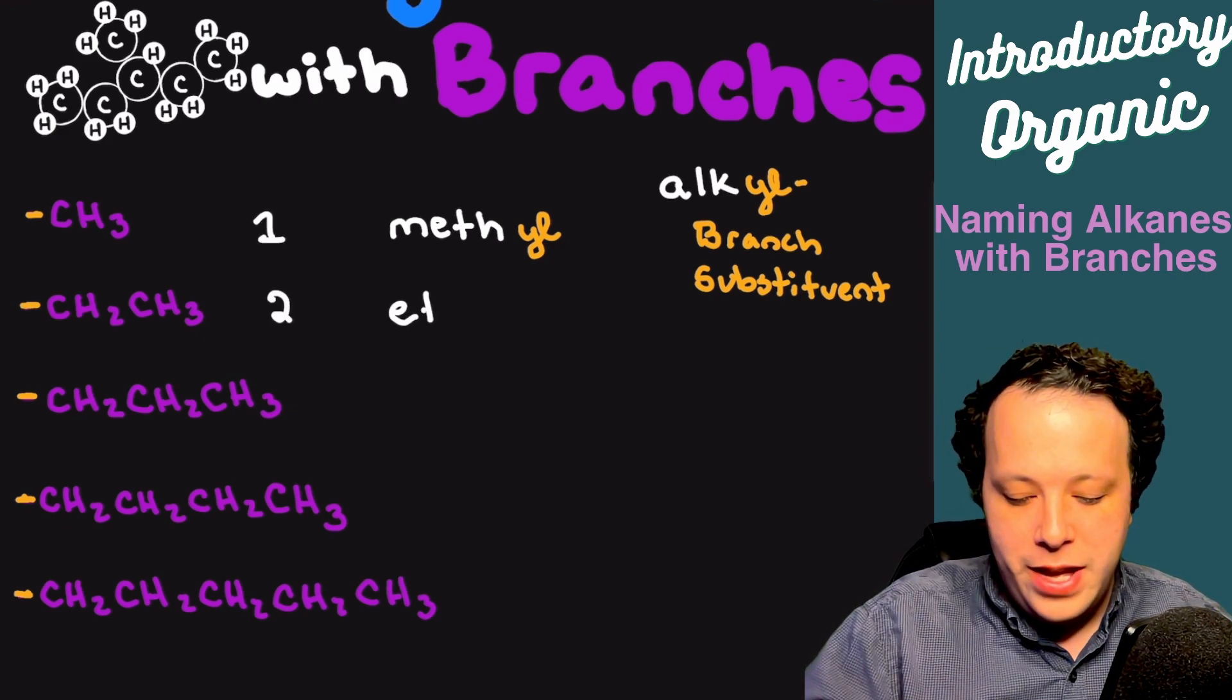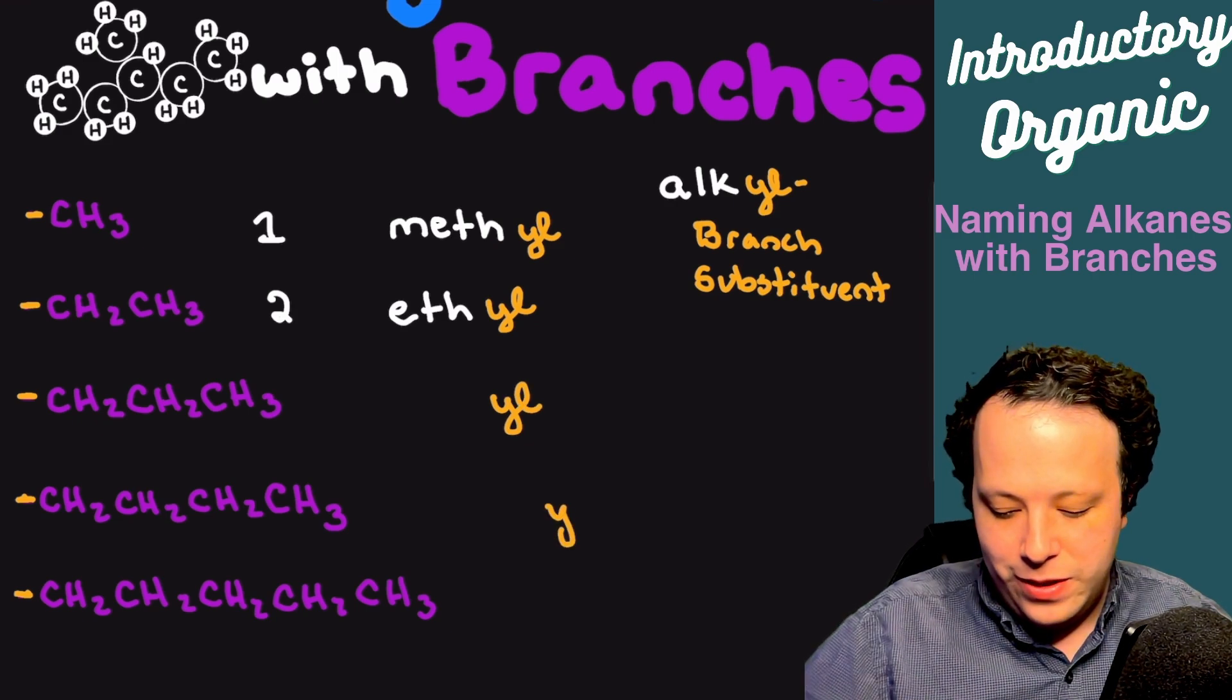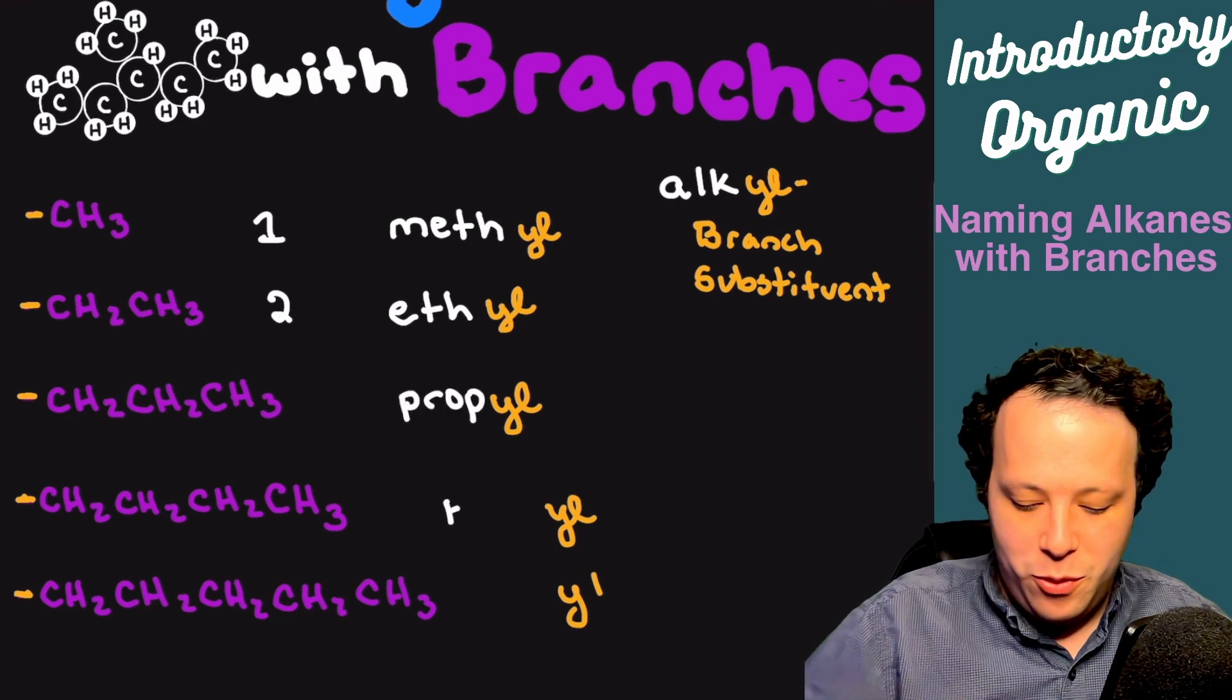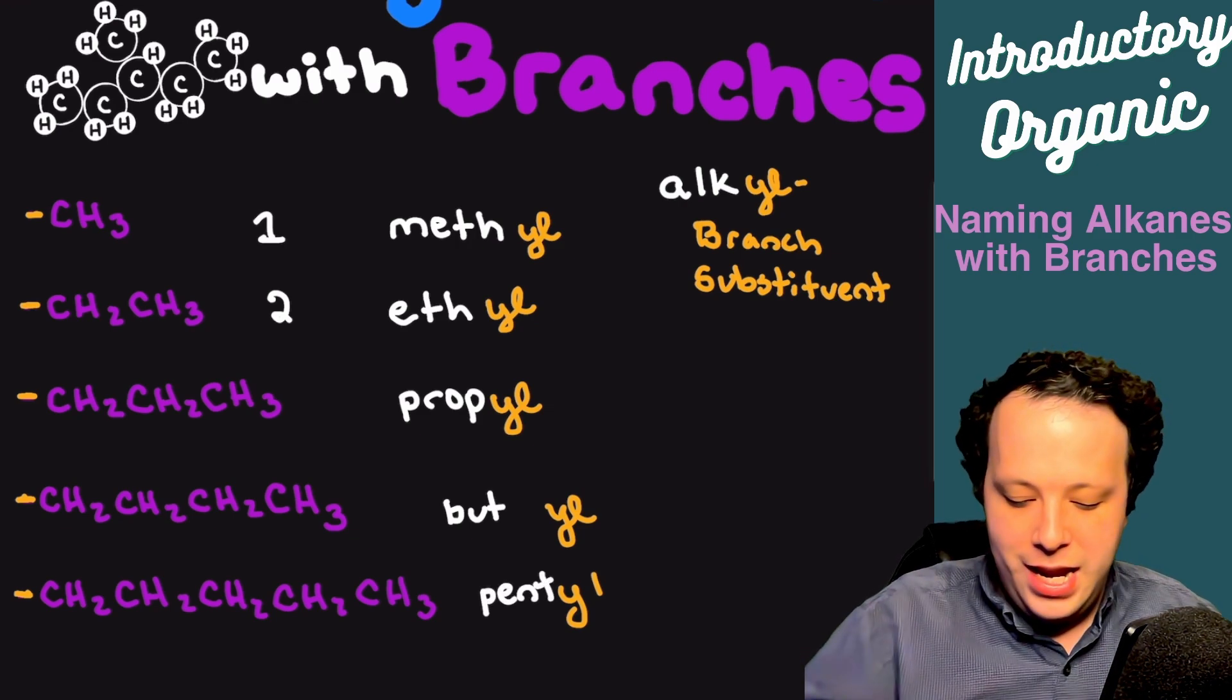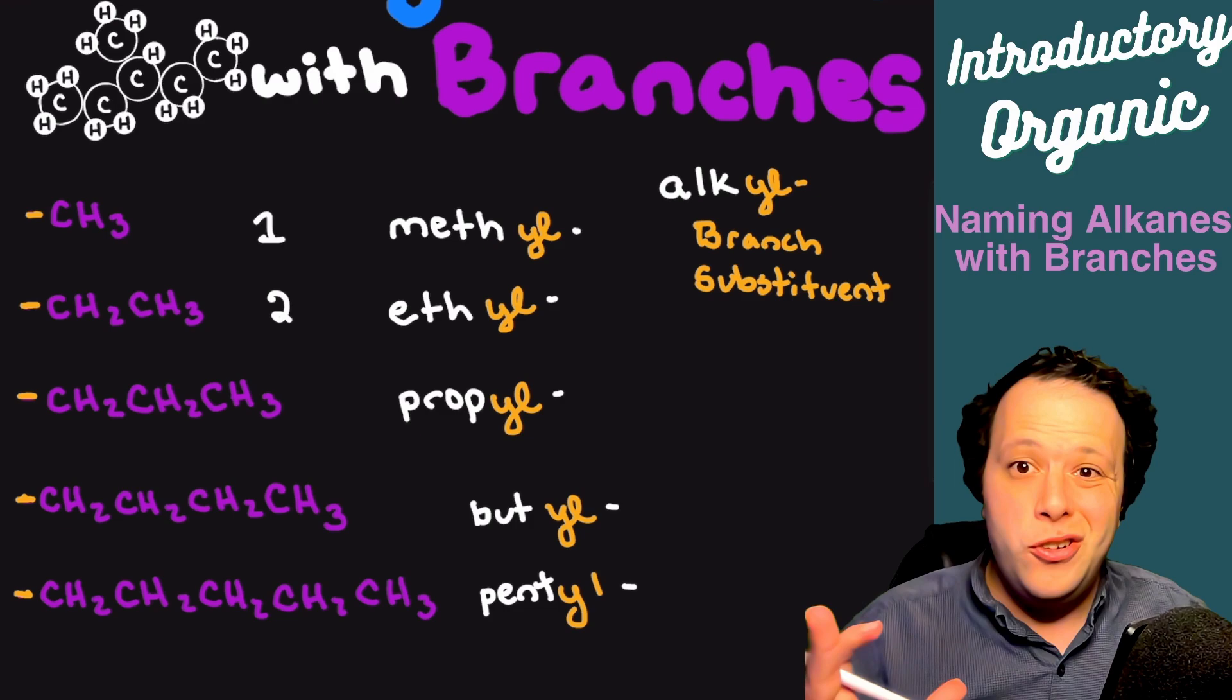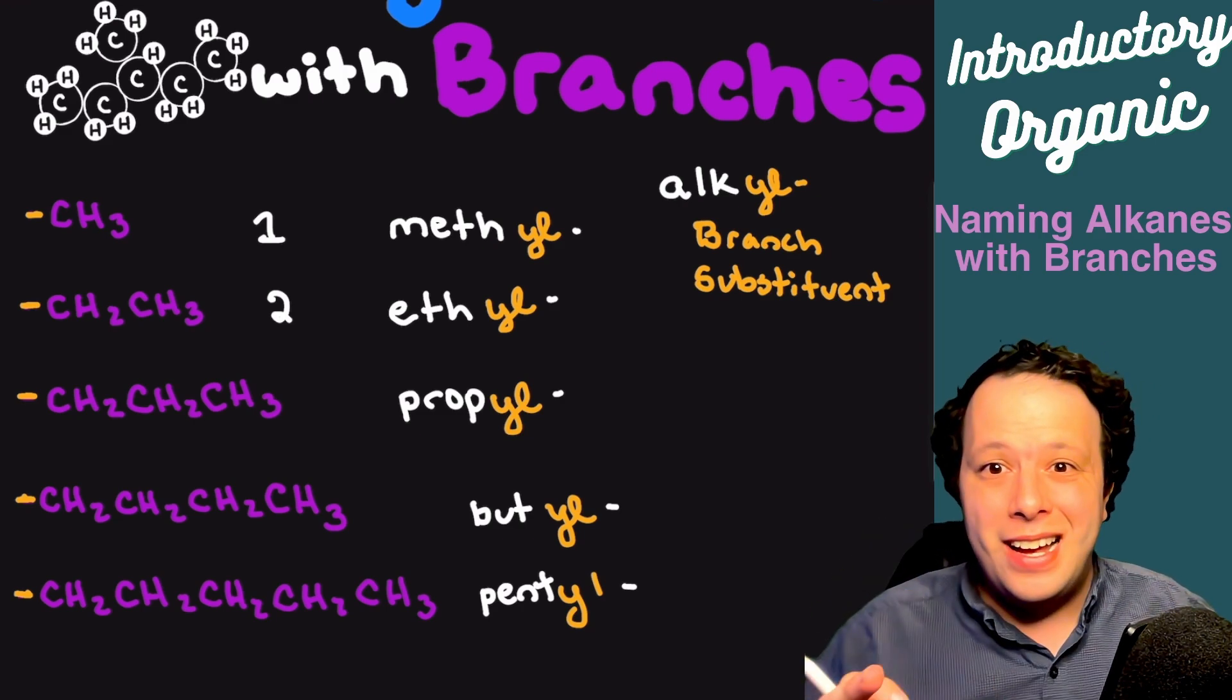Being that these are alkyl chains, we will always be using that yl ending to denote that we have a branch or substituent. Both names can be used in this case. So methyl is for one carbon, and we can continue to name the rest of them. Two is ethyl, then we have three carbons which is propyl, then four carbons which is butyl, and then five carbons which is pentyl. This is something if you're taking organic chemistry you need to memorize. They're going to be a huge part when it comes to naming structures, drawing structures, and really diving into all these.